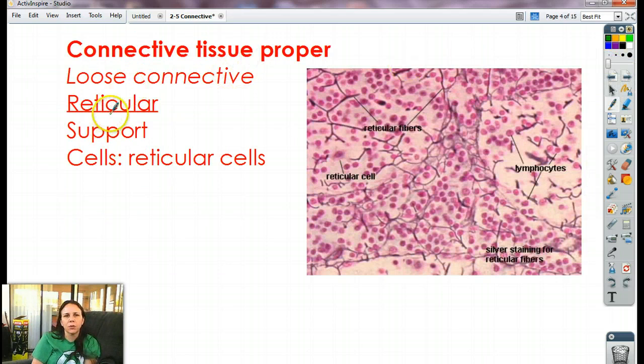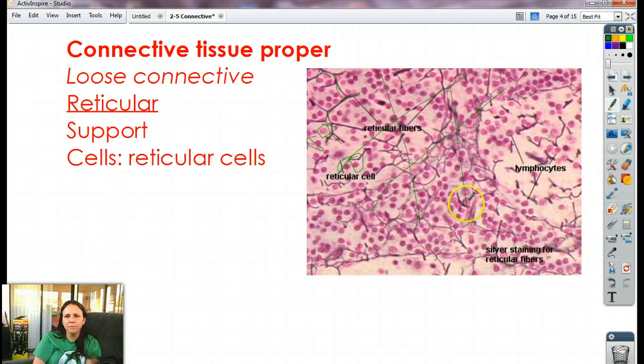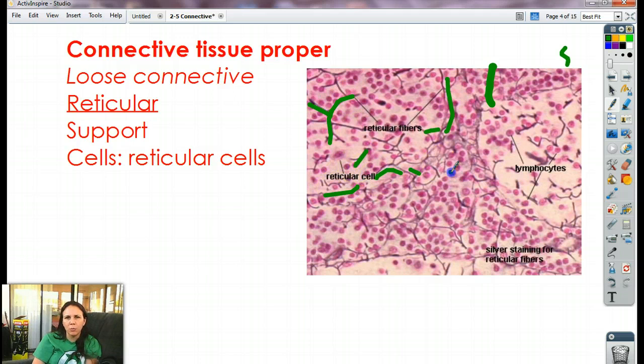Okay, the third type of loose connective is called reticular. Its main job is support, and its cells are reticular cells. And so if we look in here, we've got a lot of little fibers kind of all floating around. These little round guys, those are your reticular cells. And then we have reticular fibers that are just kind of interspersed throughout. Now this looks different than areolar because areolar has much more stuff, big lines of stuff in there. This doesn't. This one is very much packed full of cells with a little stuff. So as you can see, not as much fibers as the other one, more cells, more nuclei.